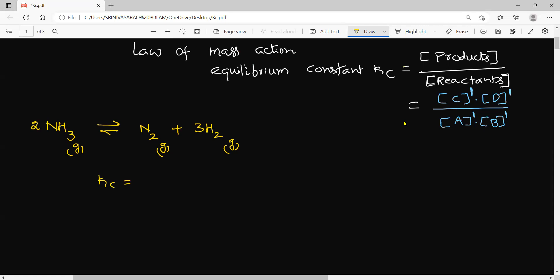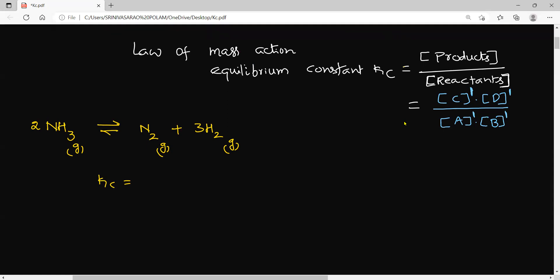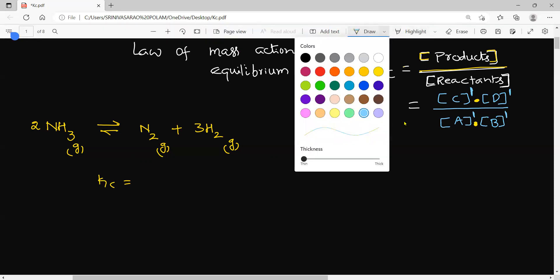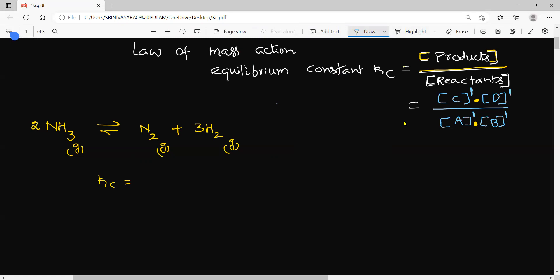The equilibrium constant at a given temperature is the ratio of the rate constant of the forward reaction divided by the rate constant of the backward reaction, or the ratio of the product of the molar concentration of the products to the product of the molar concentration of the reactants, whose power equals the stoichiometric coefficient in the balanced equation. So: ammonia has stoichiometric coefficient 2, nitrogen has 1, and hydrogen has 3.